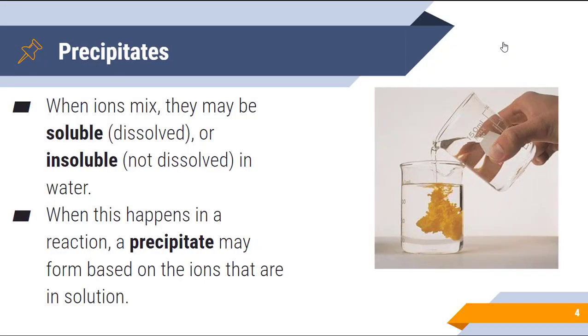When ions mix, they may be soluble, which means that they are dissolved so you cannot see them, or they may be insoluble, not dissolved in water. This primarily focuses on the solubility rules, which you'll get here in just a little bit.